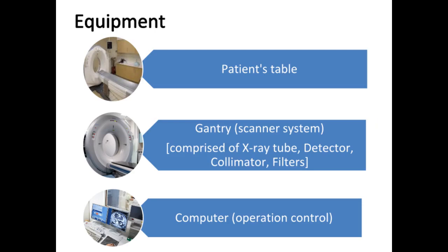The CT scanner is typically a large donut-shaped machine with a short tunnel in the center. The patient lies on a narrow examination table that slides in and out of this short tunnel. The x-ray tube and electronic x-ray detectors are located opposite each other in a ring called a gantry. The gantry contains an x-ray tube that generates x-ray beams, a detector that detects x-rays passing through the patient's body, and a collimator that narrows the beams of x-rays.